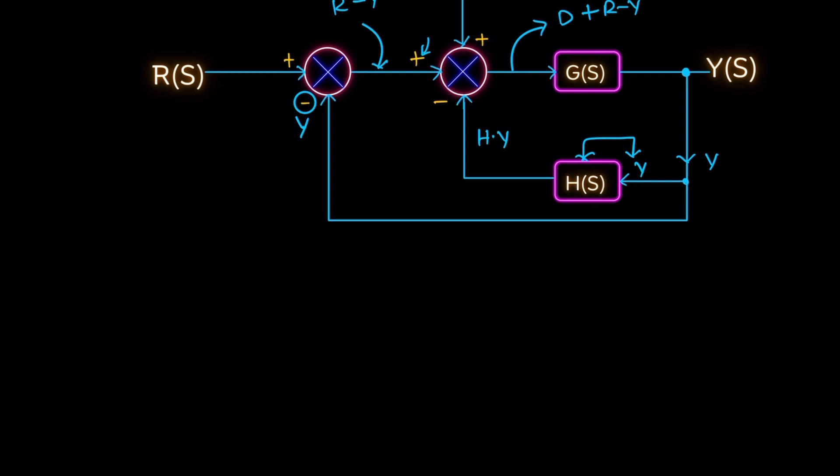On the bottom one, H Y, it's a minus sign, so minus H into Y. Then after this position, that means after G, it's multiplied by G of s also.